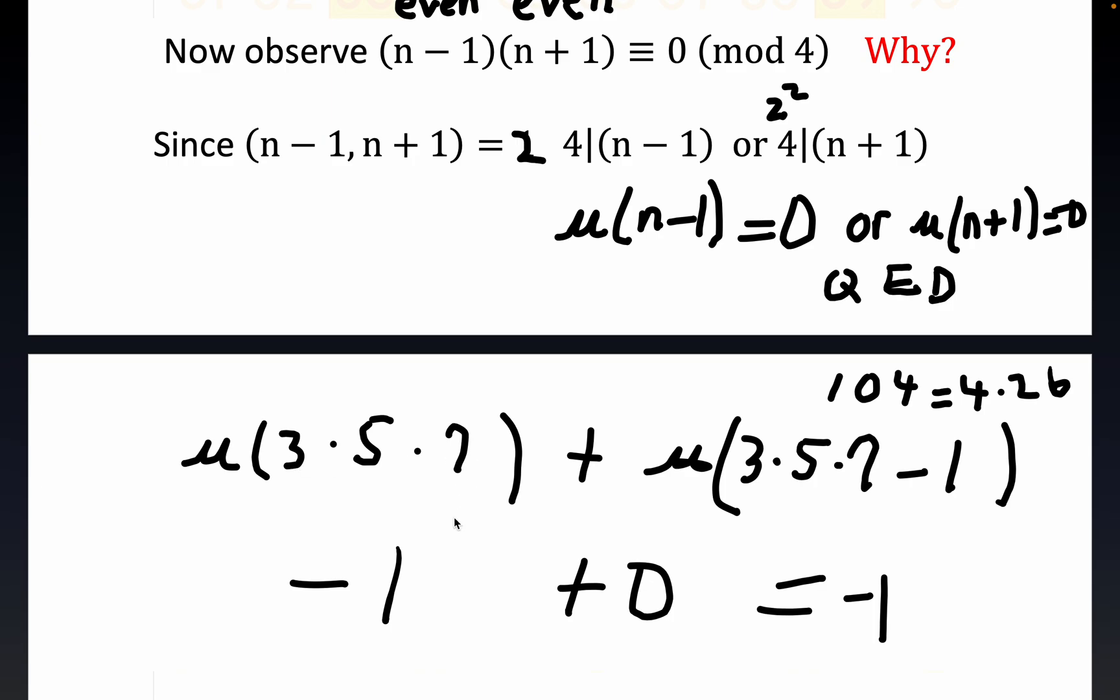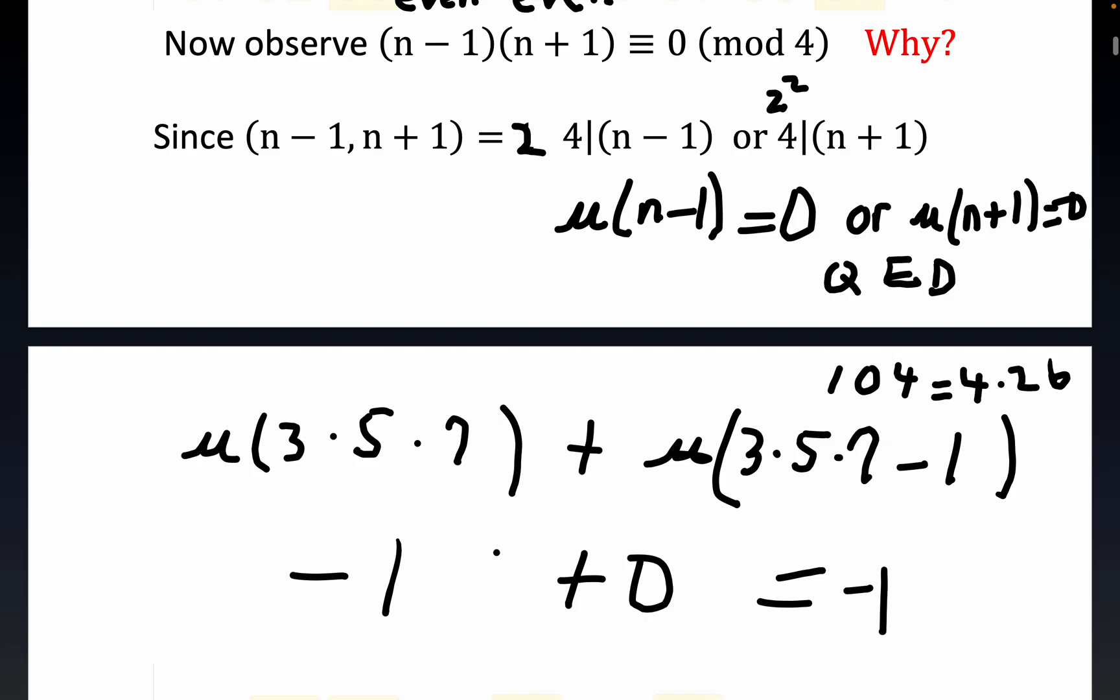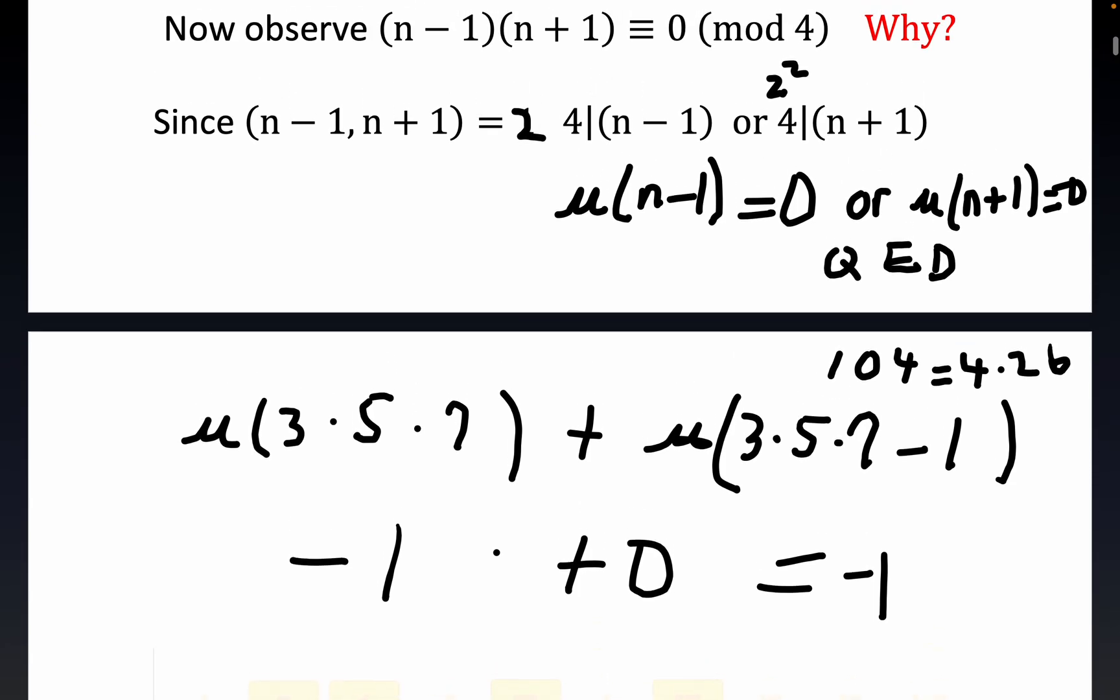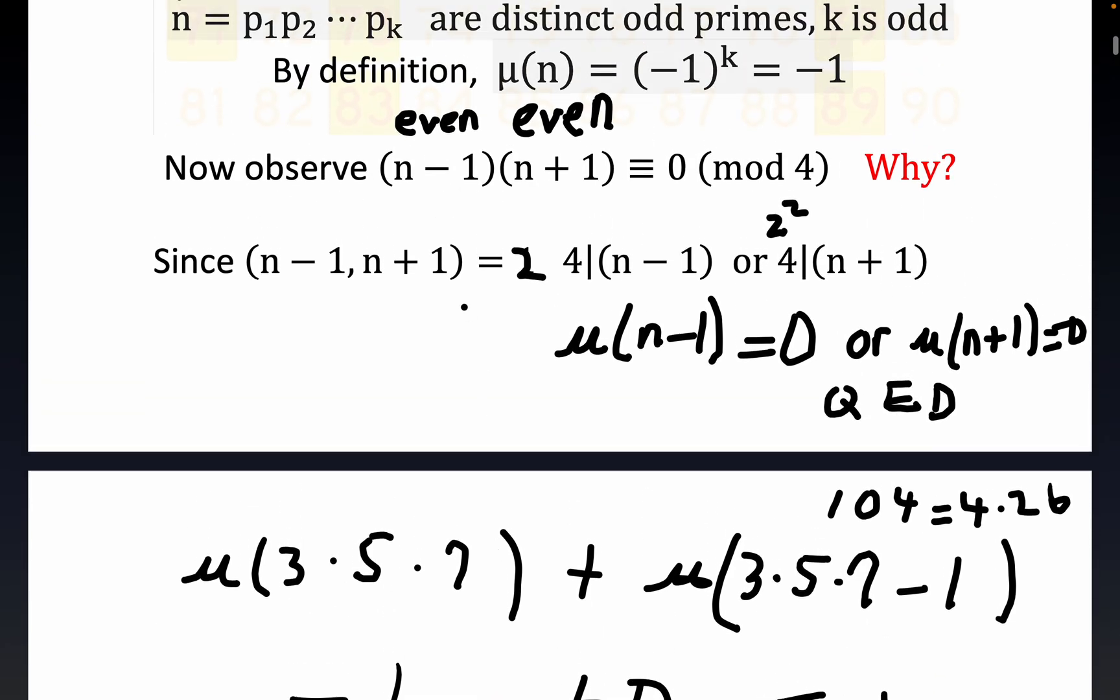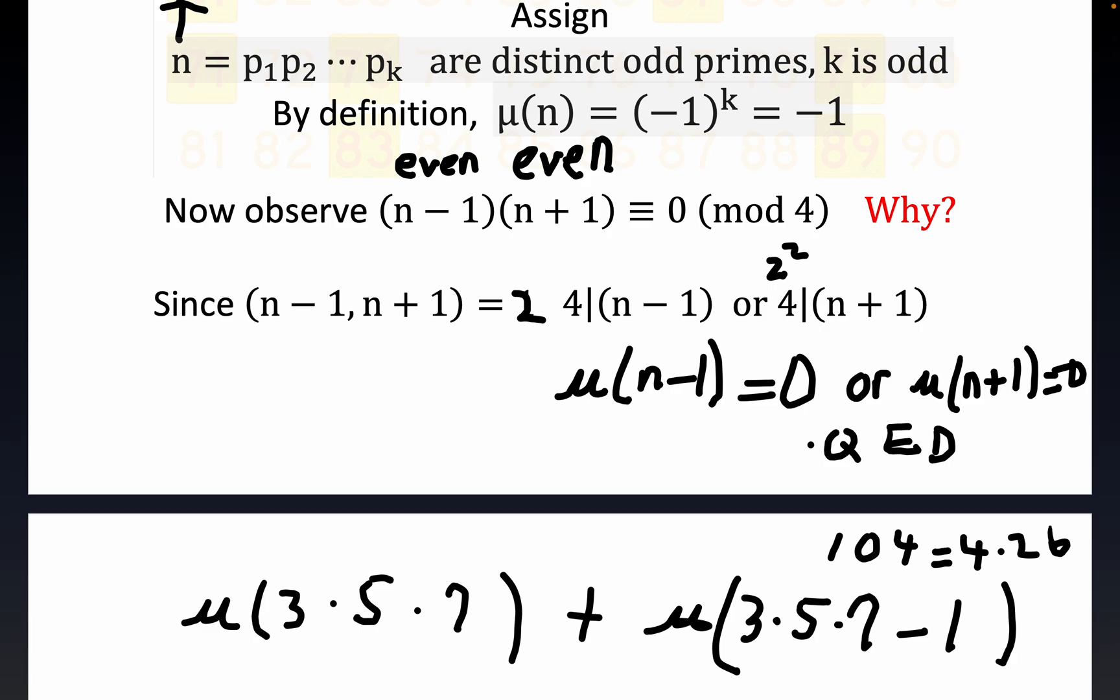It doesn't work for 2 times 3 times 5—you would get 29 and 31, the twin primes. Two is always kind of a pathological case when you're doing number theory. In any event, all of this was what we intended to prove. Hopefully it's clear enough, and thank you for viewing.